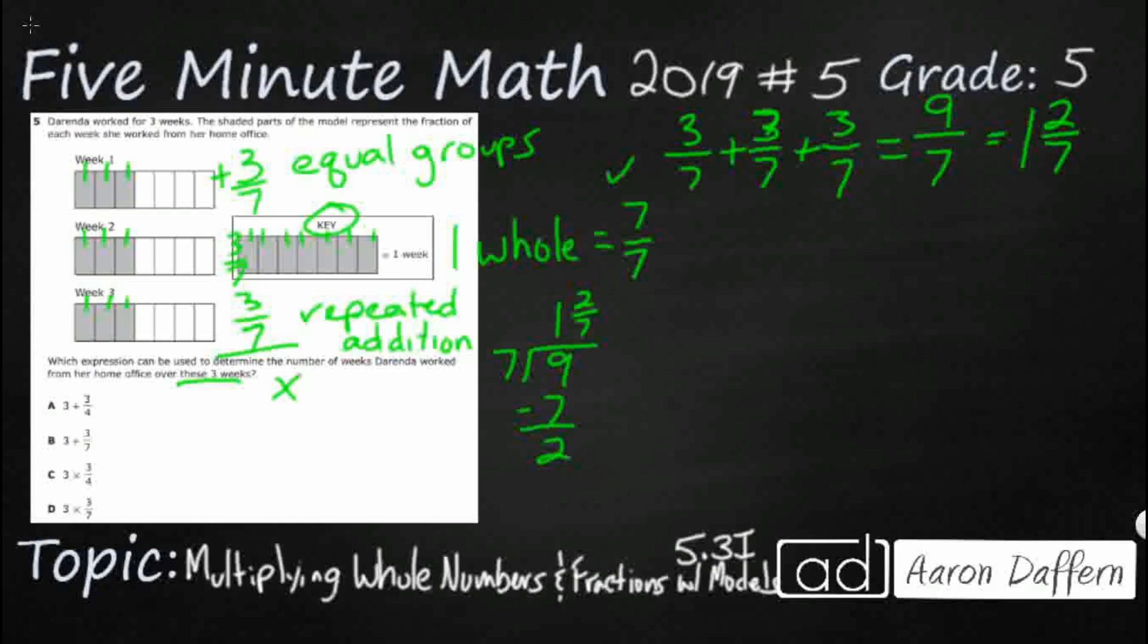I'm looking at A. Three sevenths plus three sevenths plus three sevenths would work. But I'm not even sure where this three fourths is coming from.